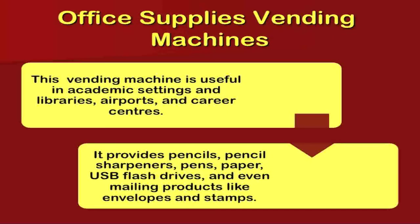Office supplies vending machines are useful in academic settings, libraries, airports, and career centers. They provide pencils, pencil sharpeners, pens, paper, USB flash drives, and even mailing products like envelopes and stamps. If you are working in a university or academic center, you often need small supplies that take a lot of effort to shop for. With a vending machine, you can easily access and get little stationery items like pencils and paper.